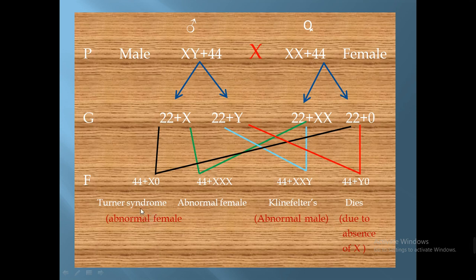This results in a disease called Turner syndrome, which affects females only. If instead the sperm containing 22 plus X fertilizes the abnormal ovum containing 22 plus XX, the result is 44 plus XXX — an extra X chromosome — resulting in an abnormal female, which we will not study in detail.